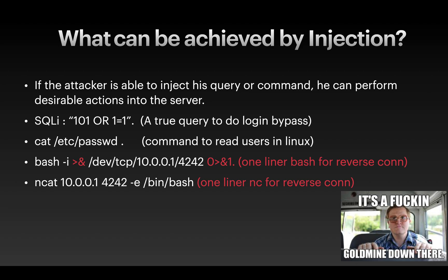What can be achieved by injection? If an attacker is able to inject a query or command, they can perform many desirable actions on the server. For example, a SQL injection authentication bypass query like '1=1 OR 1=1' makes the condition true and can perform a login bypass. Another example is 'cat /etc/passwd', which reads the users file on a Linux system. Additionally, one-liner Bash or Netcat reverse connection payloads can be used to get a complete system shell.